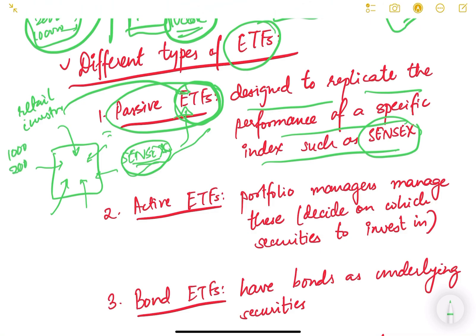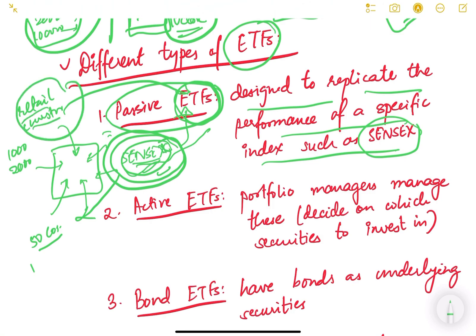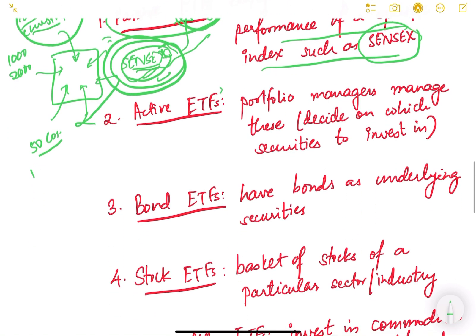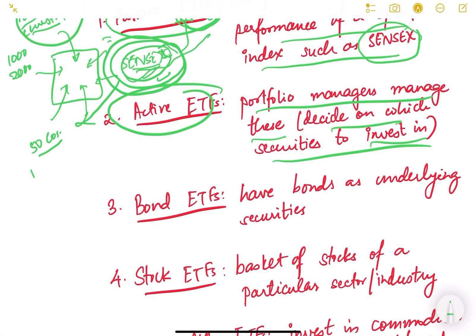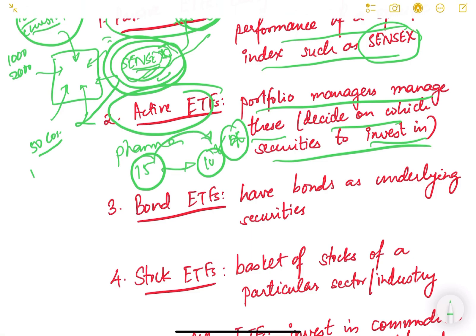To invest directly in Sensex, you would need to buy one stock each of all 50 large companies, requiring a lot of money. But for retail investors it is much easier to invest in ETFs. The second type is an active ETF, where portfolio managers actively decide which securities to invest in. For example, in a pharma sector ETF with 15 companies, the manager may remove money from two underperforming companies and invest in two others expected to perform better. So it is very actively managed.